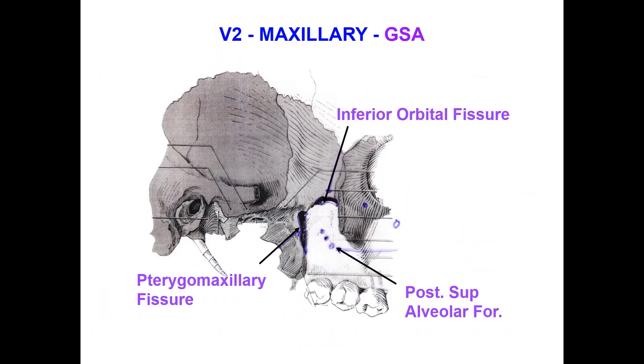This picture shows how the maxillary nerve passes through the pterygomaxillary fissure into the pterygopalatine fossa.